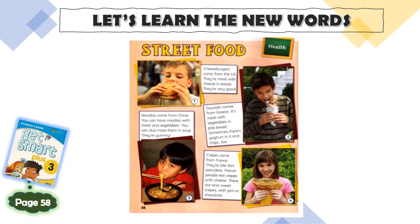So look at this one — street foods. What do you know about street food? What is the meaning of street? Street means 'jalan', food means 'makanan'. So street food is makanan yang kita boleh dapati di kedai-kedai di tepi jalan.